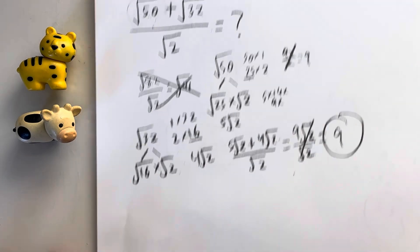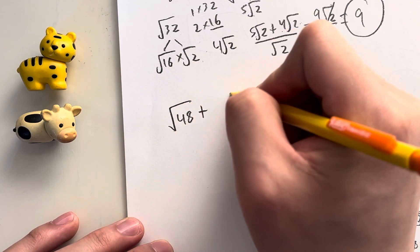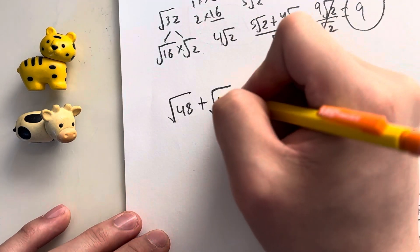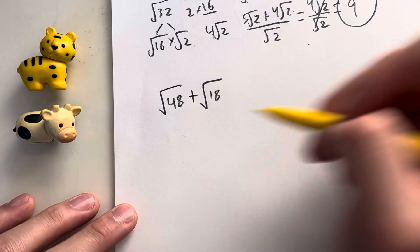So let's try out another one. Let's just say we have the square root of 48 plus the square root of 18. How do I simplify this? Look for perfect squares in 48 and 18. What are those going to be?